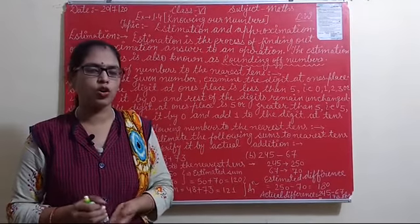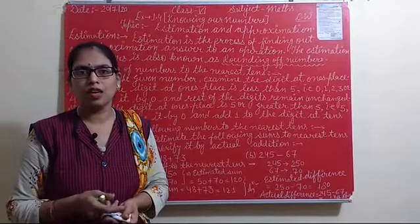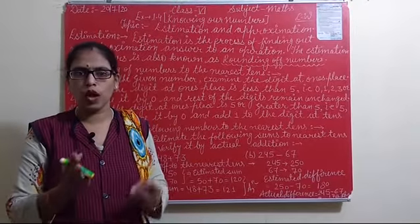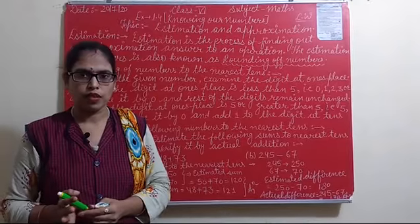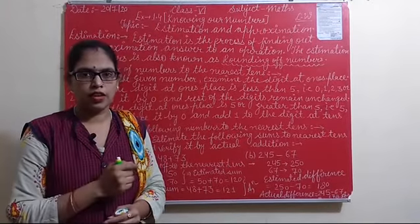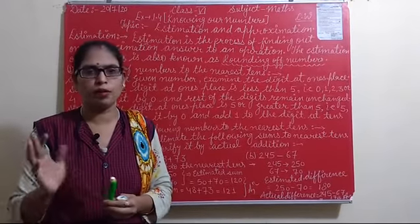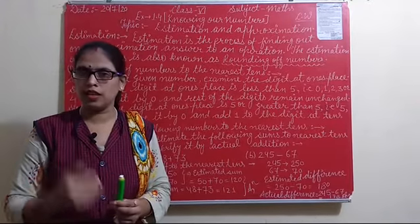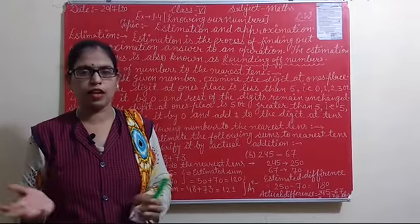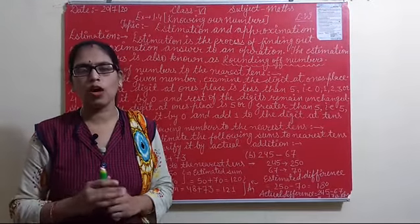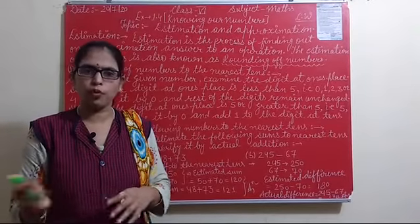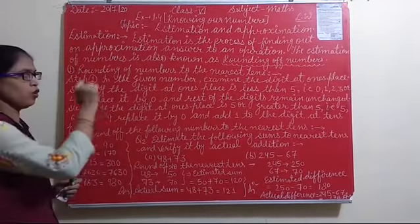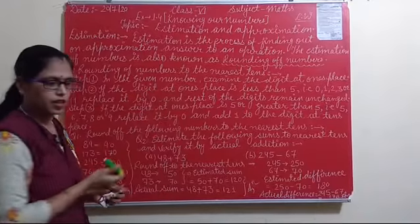Estimation is also known as the rounding of numbers. Just as we have studied rounding of figures before, rounding means converting any number to its approximate value. For example, 197 is approximately 200. There are many examples in daily routine life that we understand through estimation and approximation. So we also call this rounding of numbers.